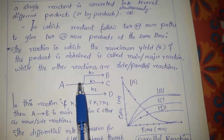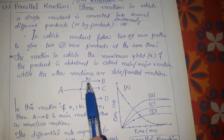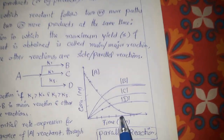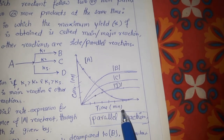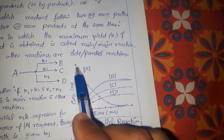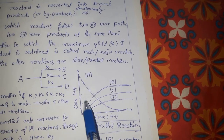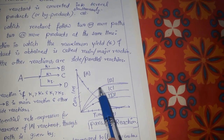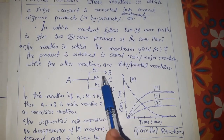This is a typical reaction in which reactant A is converted into several different products. In this case we have shown three products: product B, C, and D. These products are formed through different rate constants K1, K2, and K3. This is the graphical representation of parallel reactions: on the x-axis we have time in minutes and on the y-axis concentration. At zero time, reactant A has the highest concentration, and with the passage of time the reactant is converted into products.